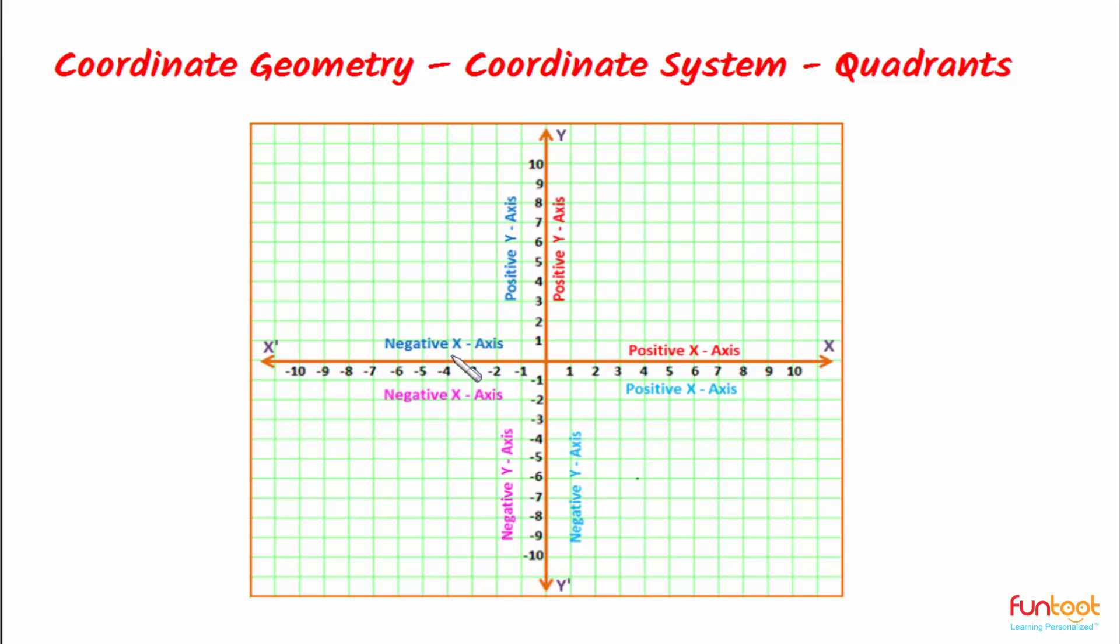Points lying along the X axis and Y axis do not belong to any of the quadrants. These quadrants are numbered in an anti-clockwise manner like this: this is the first quadrant, this the second, this the third, and this the fourth.